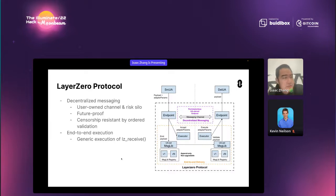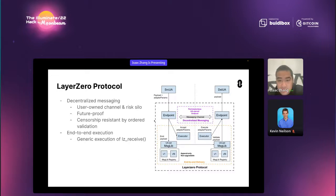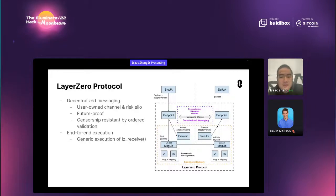On Web 2, sending messages means the other guy will receive it. But on Web 3, after the message arrives and is validated, you also need to execute it on the other side. Someone has to pay for the gas to provide execution context. So that part is already in the protocol too — we call it end-to-end execution. When you send the message, you can attach something we call adapter parameters, which we forward to the executor, and the executor will execute accordingly at the destination. We'll talk about how powerful you can configure the adapter parameters on the GitBook later on.